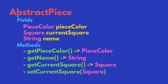Here we have the class definition of an abstract piece. It's going to have the following fields: a piece color object representing the piece's color, the current square that the piece is on the board, and a string name representing the name of the piece. The methods associated with this abstract piece are going to be get piece color, get name, get current square, and set current square. Set current square will allow us to move a piece on our chessboard.